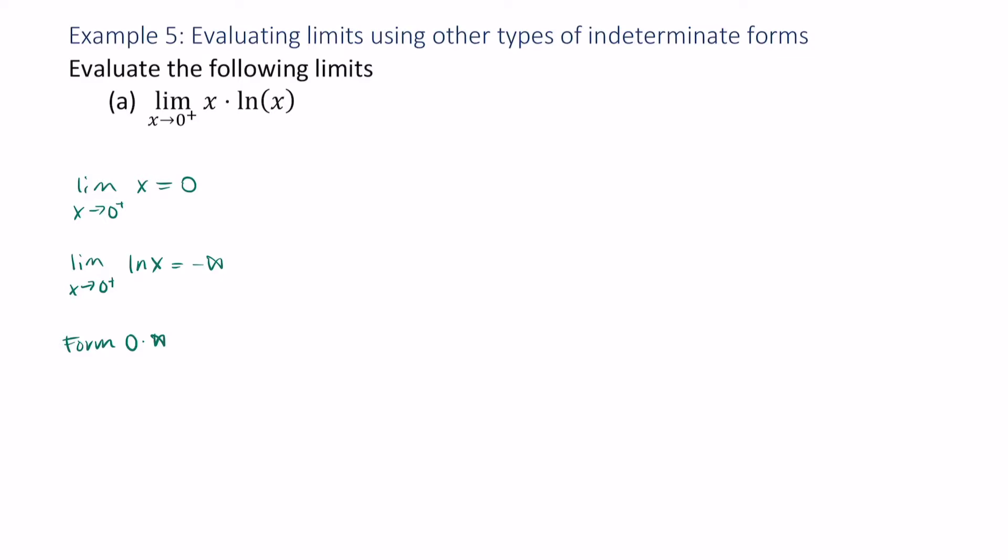So when you encounter a limit like this, it's best to rewrite it as either infinity over infinity or 0 over 0. In this case, we're going to rewrite this as infinity over infinity. This becomes the limit as x approaches 0 from the right of the natural log of x over 1 over x.